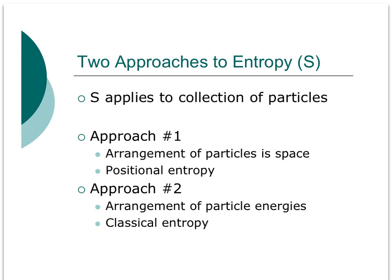This first approach is called positional entropy. As we'll make clear with a specific example, we will describe how particular positional arrangements of the collection of particles occur with different probabilities. The second approach we'll take to entropy is a classical approach, during which we're going to be concerned with the energy of the system. We have two ways to think about entropy: the physical positioning of particles, and the energy of those particles. We'll now turn our attention to the position of the particles and positional entropy.